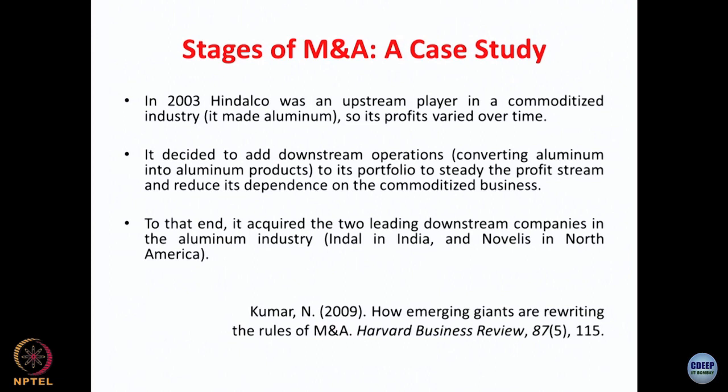Hindalco decided to add downstream operations as well — meaning converting aluminum into aluminum products — to its portfolio, to steady the profit stream and reduce its dependence on the commoditized business. If the commodity market has more fluctuation, the consumer market has lesser fluctuation in pricing.